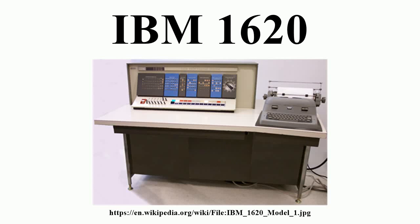The IBM 1620 was announced by IBM on October 21, 1959, and marketed as an inexpensive scientific computer. After a total production of about 2,000 machines, it was withdrawn on November 19, 1970. Modified versions of the 1620 were used as the CPU of the IBM 1710 and IBM 1720 industrial process control systems. Being variable word length decimal, as opposed to fixed word length pure binary, made it an especially attractive first computer to learn on, and hundreds of thousands of students had their first experiences with a computer on it.